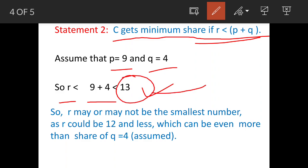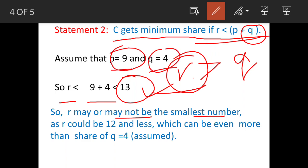So that means r may be more than the amount being given to q. So he may or may not be the lowest. By putting these numbers 9 and 4, he may or may not be the lowest number because with these two values he is getting more than the amount being given to q. So this statement is incorrect because here I told you that the statement is he is definitely getting minimum share. This statement is not correct because the value could be more than what q is getting, or it could be less also.